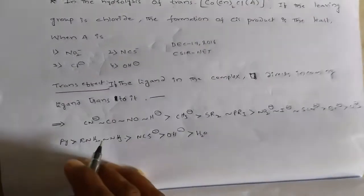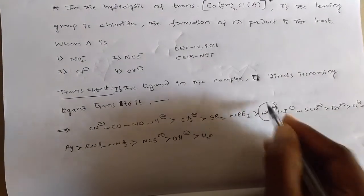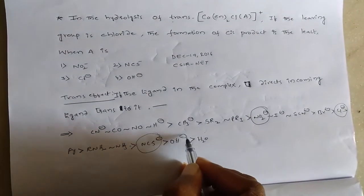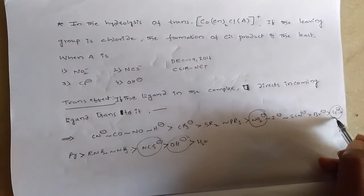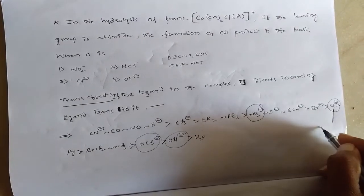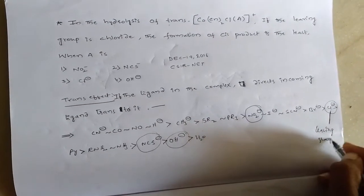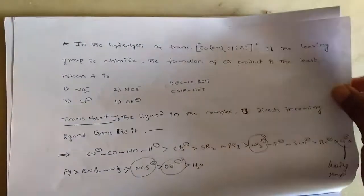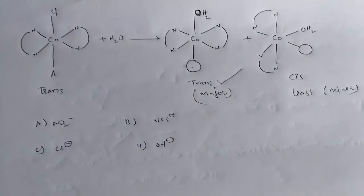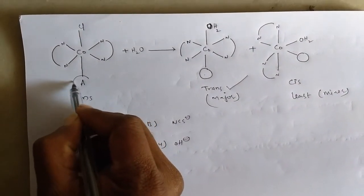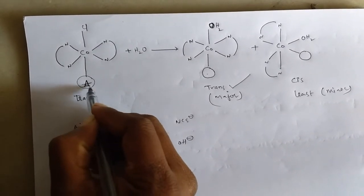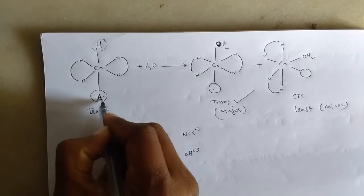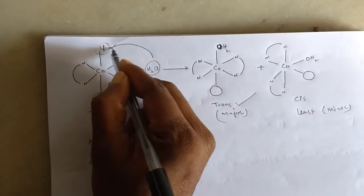A is NO2-, B is NCS-, C is Cl-, and fourth is OH-. If you observe the trans-effect series, here is NO2-, next is chlorine, next is NCS-, and next is OH-. So trans to Cl, this is the leaving group, chlorine is the leaving group. To direct, if you observe the question, what should be the A?